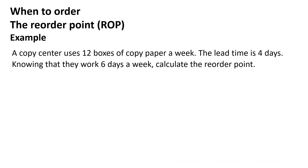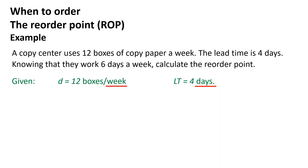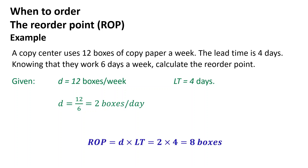Example: A copy center uses 12 boxes of copy paper a week. The lead time is 4 days. Knowing that they work 6 days a week, calculate the reorder point. The demand rate D equals 12 boxes per week and lead time LT equals 4 days. Since demand and lead time must be in the same units, D is divided by 6 to convert to a daily rate: D equals 12 divided by 6 equals 2 boxes per day. Therefore, ROP equals D multiplied by LT equals 2 multiplied by 4, equal to 8 boxes. This means the copy center should place an order once they have 8 boxes on hand.